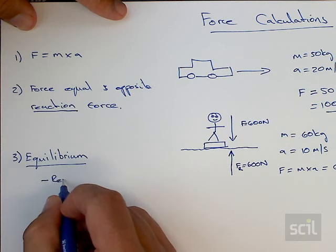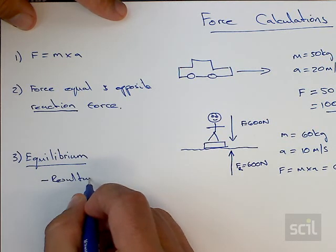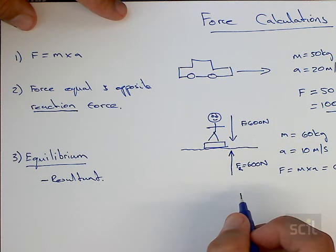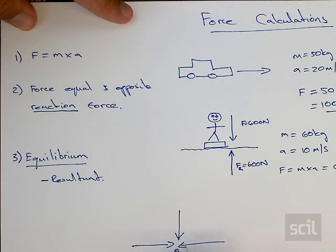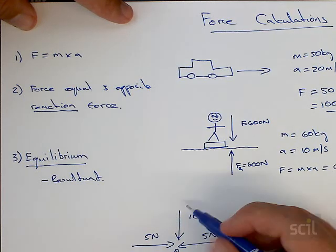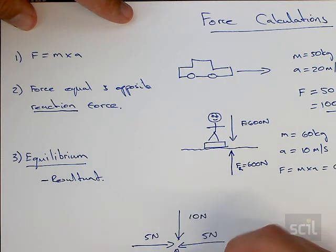The word resultant is something we commonly use as what is the total effect of all the forces in our system. So if we had one person pushing this way and another person pushing this way, another person pushing this way and another person pushing this way, let's say with five newtons and five newtons and ten newtons and ten newtons, you can see in the system that all these forces cancel each other out.